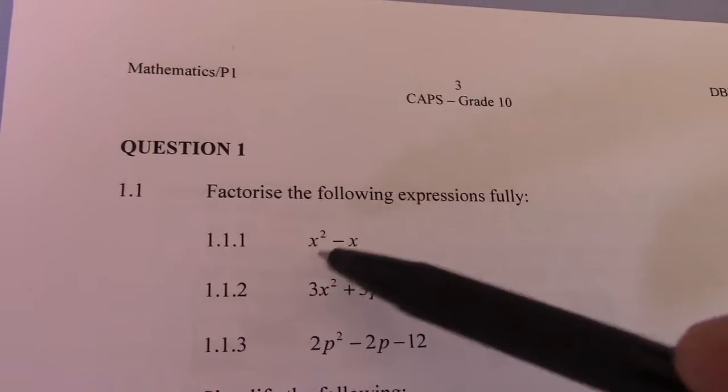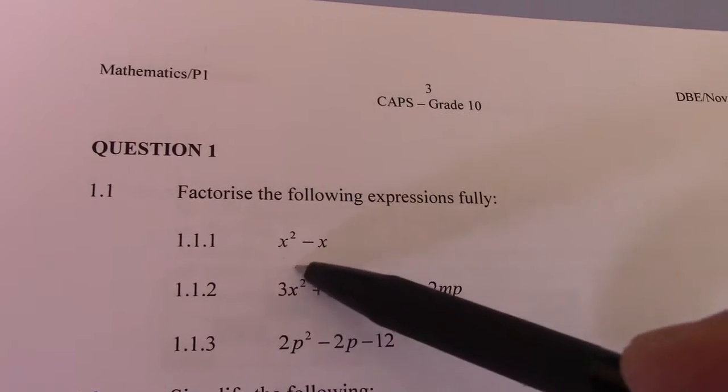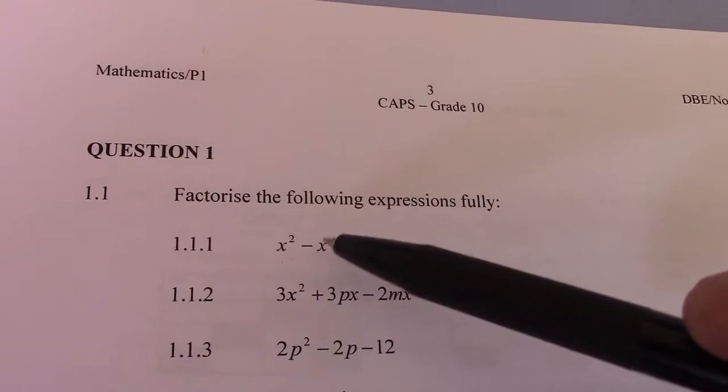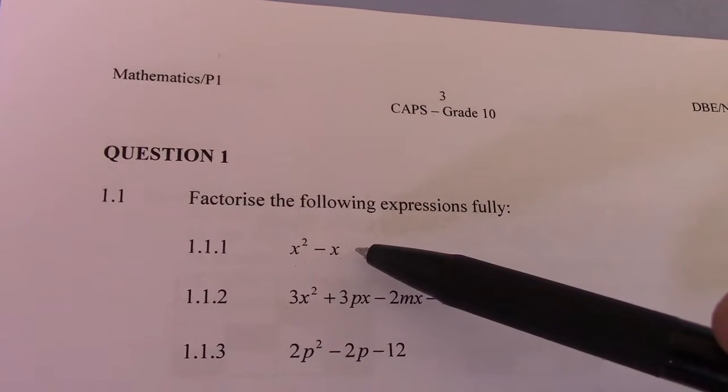So you need to understand, if two terms are given, basically we are testing you on one of two things. Either you're going to look for a common factor, or it's the difference of two squares.